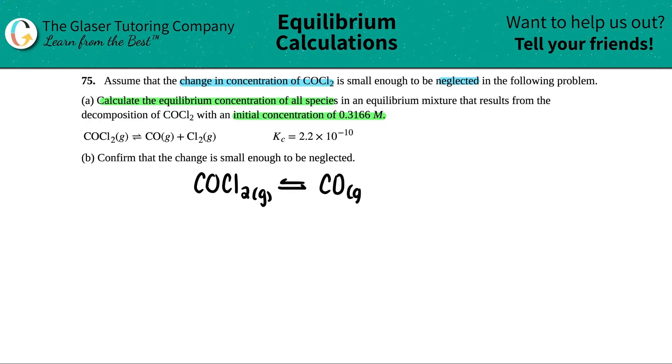Anytime they give you an equation, just make sure it's balanced. I'm looking at this and it looks pretty good to me. So we're going to go straight from here. We need to find all of the equilibrium concentrations of all species, which basically means all of the compounds or molecules in the balanced equation. They said we are starting with an initial concentration of 0.3166 molarity of the COCl2. Whenever they give you an initial concentration or a starting concentration, and you're in the equilibrium chapter, we're doing an ICE table.